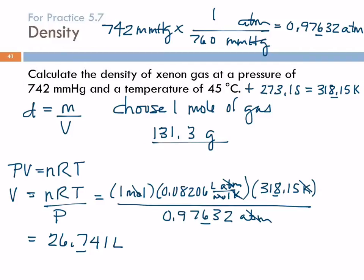So here's my mass, and I'm going to divide by my volume. Mass divided by volume. My calculator is giving me 4.91. So that's the density of this gas, 4.91 grams per liter.